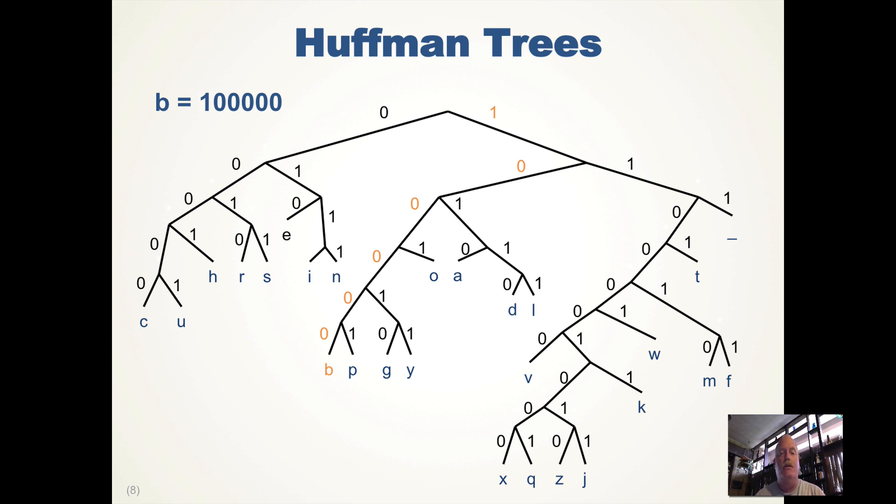So B does not occur as often in English text as E. So E has a shorter Huffman code.